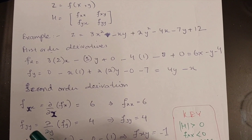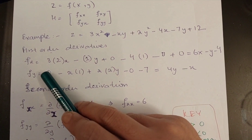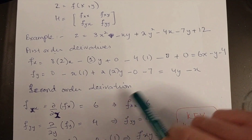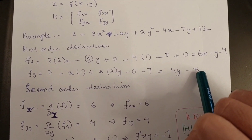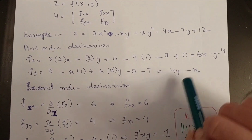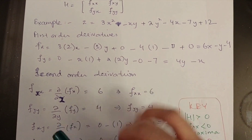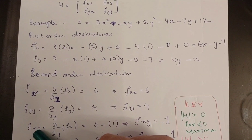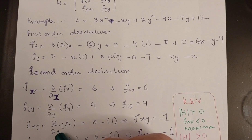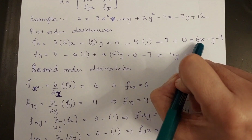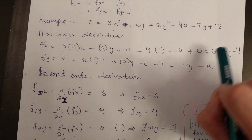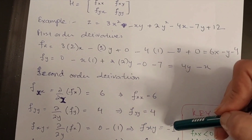Now the second-order derivative with respect to y (fyy): we take fy and apply another partial derivative with respect to y. The 4y term gives 4 as y becomes 1, and the x term gives 0 because there is no y. So the second-order derivative with respect to y is 4. For fxy, I take fx and apply the partial derivative with respect to y: 6x with respect to y gives 0, y with respect to y gives 1 (so minus 1 stays), and 4 gives 0. So fxy equals minus 1.